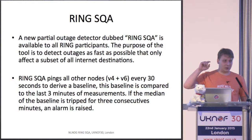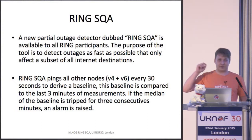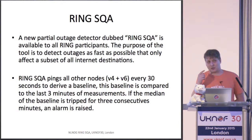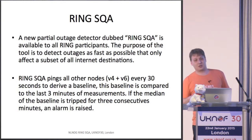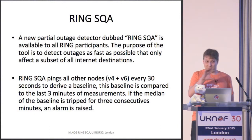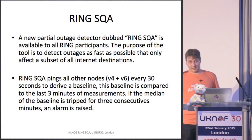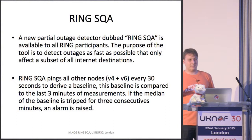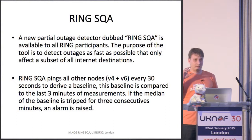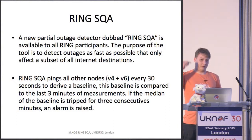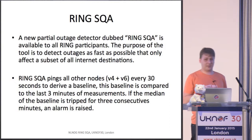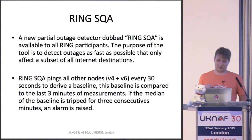So there's a ring buffer in SQA. It measures every minute, each probe, each node, two times. The baseline is derived, and if in the last three minutes the median trips the previous 27 minutes baseline, then something is wrong.